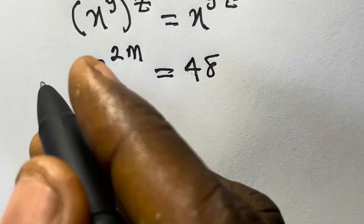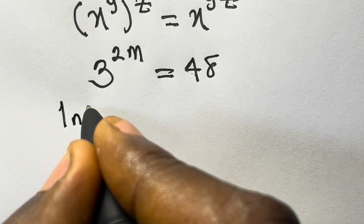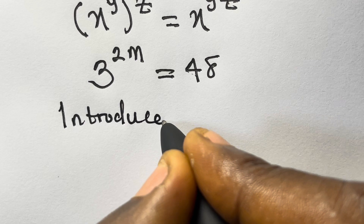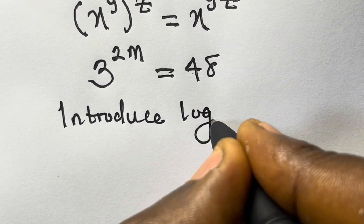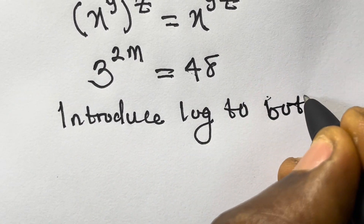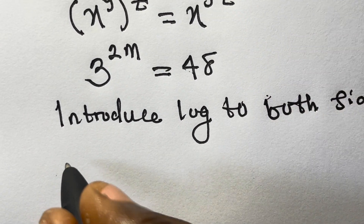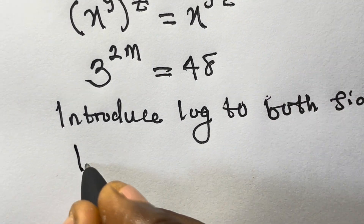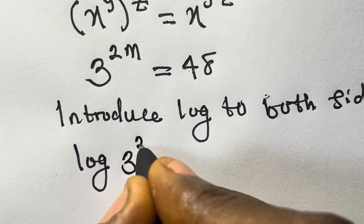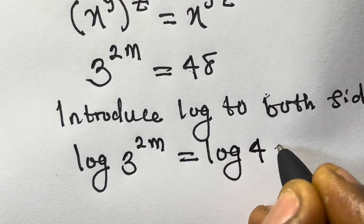From here we introduce logarithms — we introduce log to both sides. So we have log of 3 raised to power 2m equals log 48.